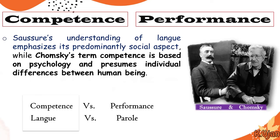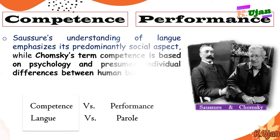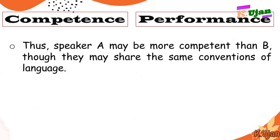So if we look at langue, the differences in language reflect a social aspect — we are learning language from society, from rules, grammar, and other languages. But competence is something related to one's psychological ability; it is an individual's mental capacity. This is the difference made by these two linguists. A speaker A may be more competent than speaker B, though they may share the same conventions of language.